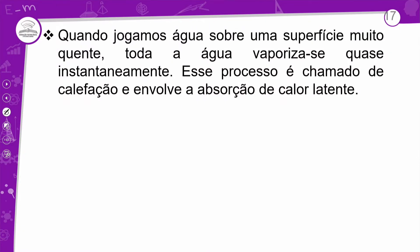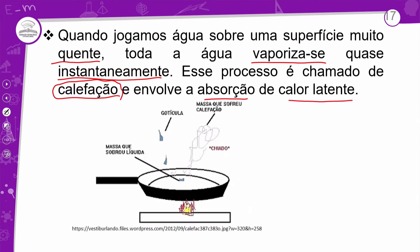Por que a panela não deforma? Porque a água tem uma capacidade muito maior que o ferro — ela puxa o calor quase que instantaneamente. É como o experimento do balão com água: por que você coloca um isqueiro aceso embaixo e o balão não queima? Porque passa instantaneamente para a água, que absorve todo aquele calor. Para derreter, tem que aquecer acima do limite — enquanto não conseguir, não vai derreter. Esse processo de vaporização instantânea é chamado de calefação, envolvendo a absorção de calor latente.